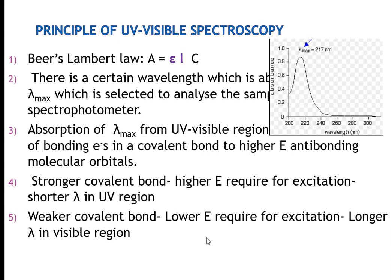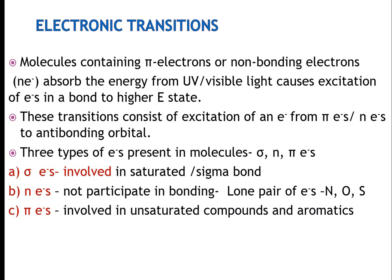Weaker covalent bonds require lower energy and give longer lambda in the visible region. In electronic transitions, molecules containing pi electrons or non-bonded electrons absorb UV or visible light and get excited to higher energy states. These transitions involve sigma electrons, pi electrons, and n electrons transitioning to anti-bonding orbitals. Sigma electrons are present in saturated sigma bonds. N electrons are lone pair electrons on nitrogen, oxygen, or sulfur atoms. Pi electrons are involved in unsaturated compounds like alkenes, alkynes, and aromatic benzene-based compounds.